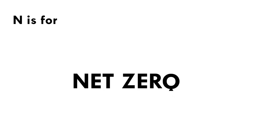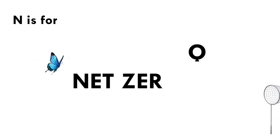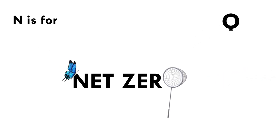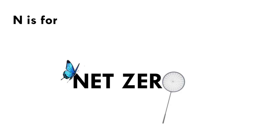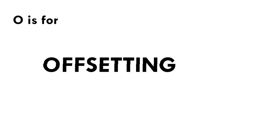N is for net zero. Simply put, net zero refers to the balance between the amount of greenhouse gas that's produced and the amount that's removed from the atmosphere. It can be achieved through a combination of emission reduction and emission removal, for example by offsetting.